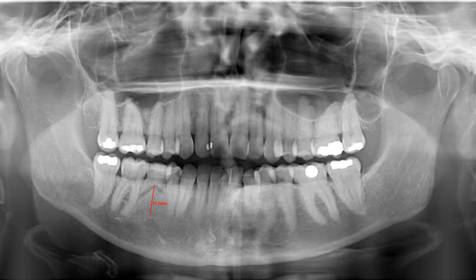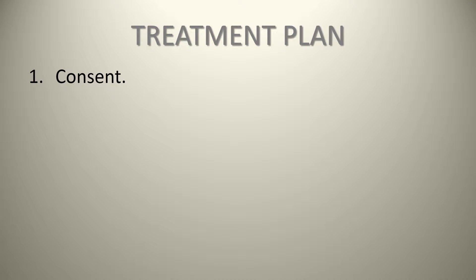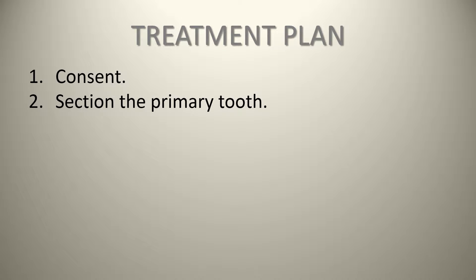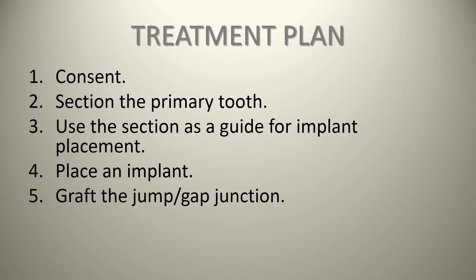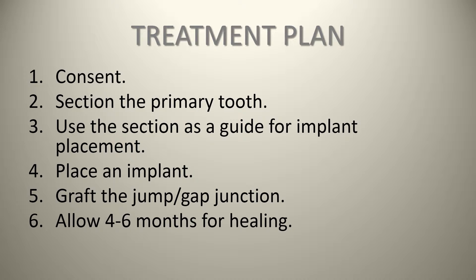The treatment plan for this patient begins with consent. After achieving adequate anesthesia, we are going to section the primary tooth and use the section as a guide for implant placement, limiting the challenges created by trying to create an osteotomy in those extraction voids. Then we will place an implant, place some sort of graft in the jump gap junction, and give this case around four to six months of healing.